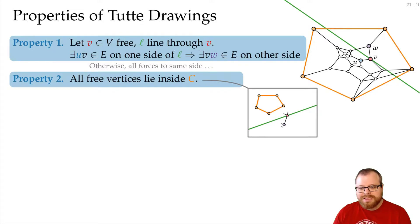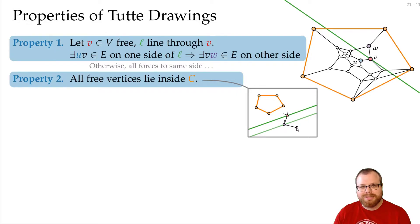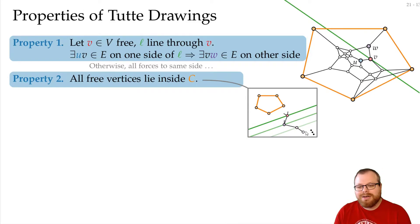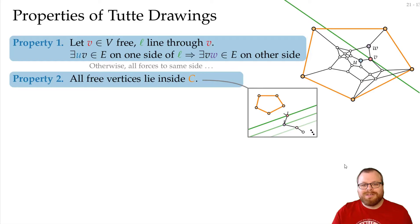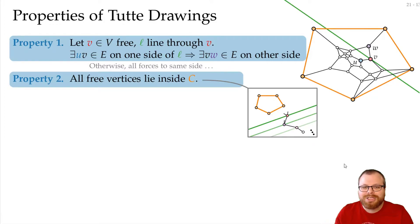We move the line to that neighbor. It has the red vertex as a neighbor, so by Property 1 it must also have a neighbor on the other side. We keep moving the line, and by Property 1 each new vertex must have a neighbor further on. For every vertex we encounter, we must have a neighbor on the other side.